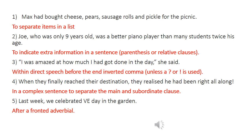Sentence number two uses commas to indicate extra information in a sentence, either as parenthesis or a relative clause. As you know from our previous learning, if I take out the extra information and pair of commas in this case, I am left with a main clause that makes sense on its own. Without the commas, it's hard to read the sentence clearly. Sentence number three uses a comma at the end of direct speech, but before the inverted commas.